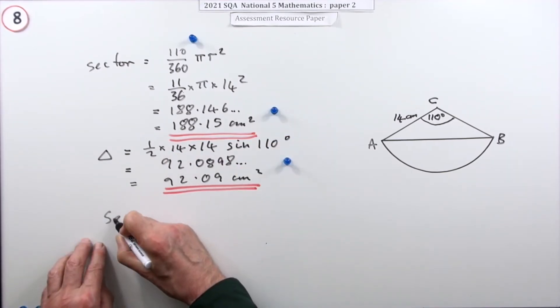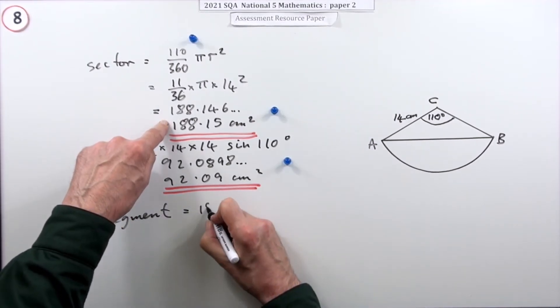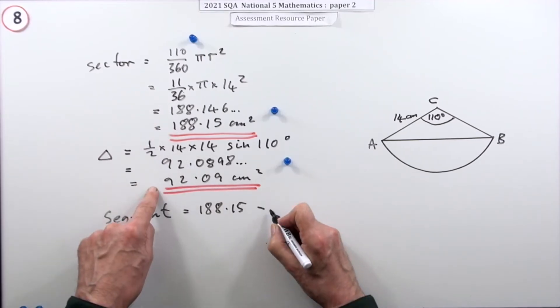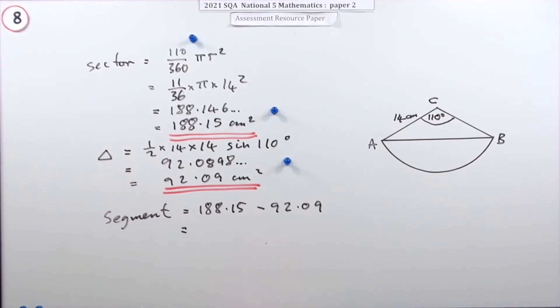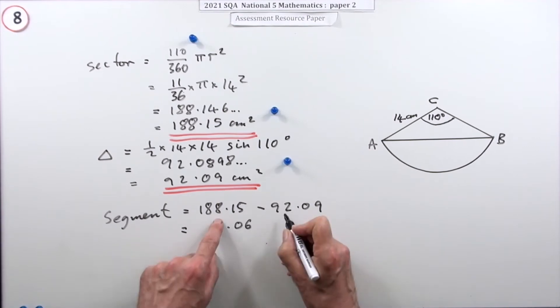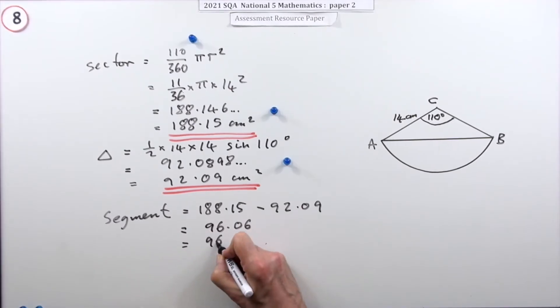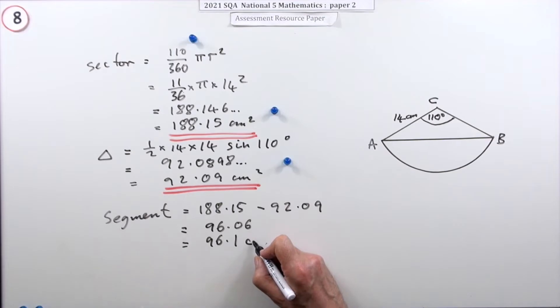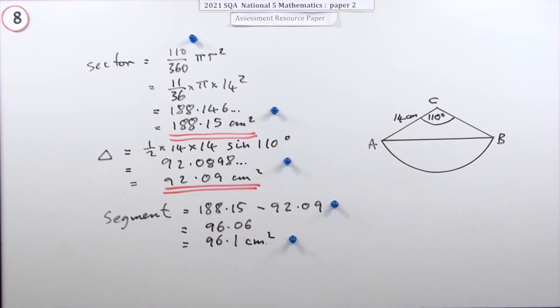Now you can get the segment because the segment will be the whole thing, 188.15, take away that triangle 92.09. That leaves 96.06, then 96.1 centimeters squared. Here you're getting one mark for knowing to subtract them and one for the final answer.